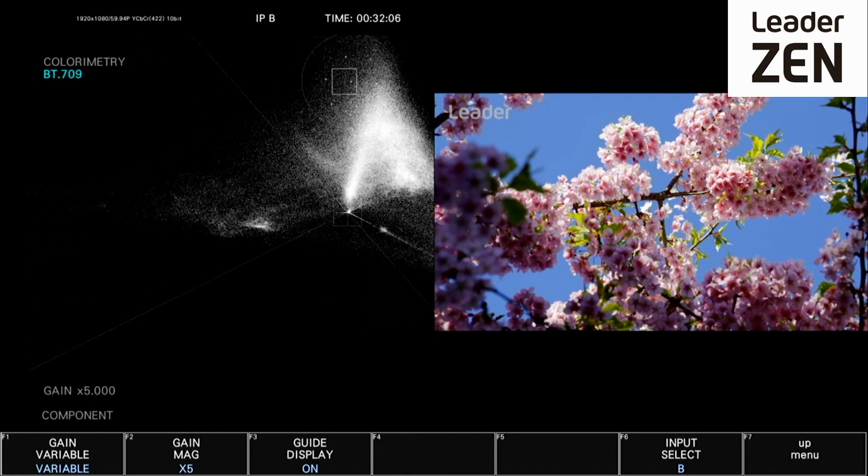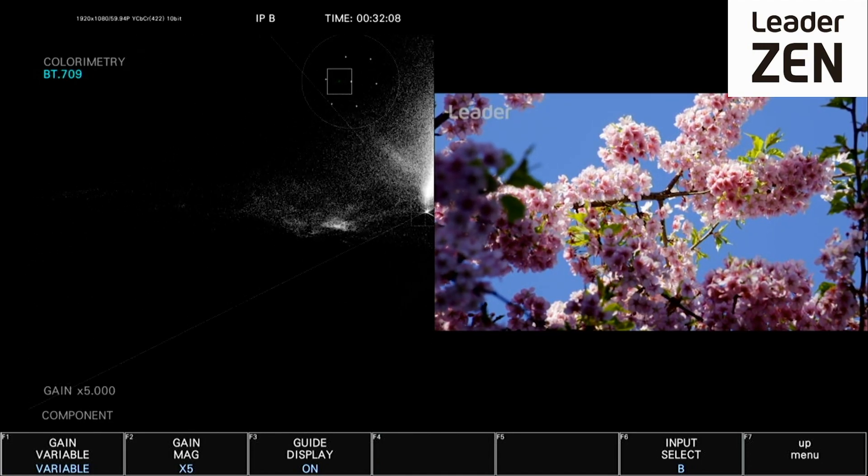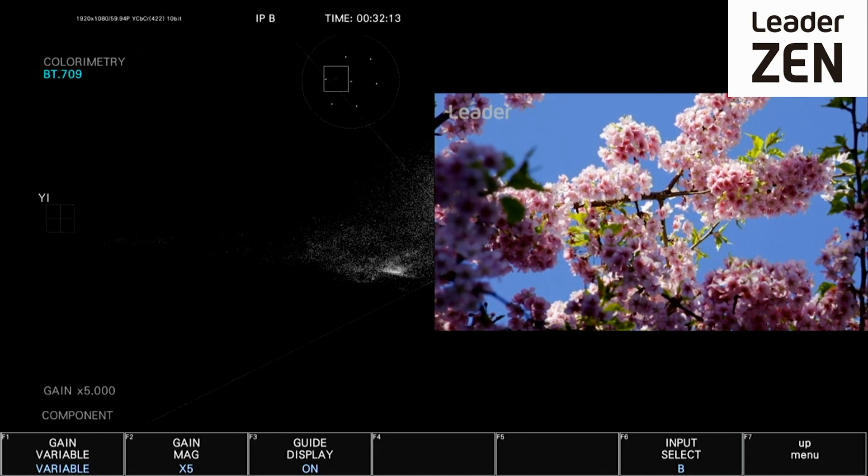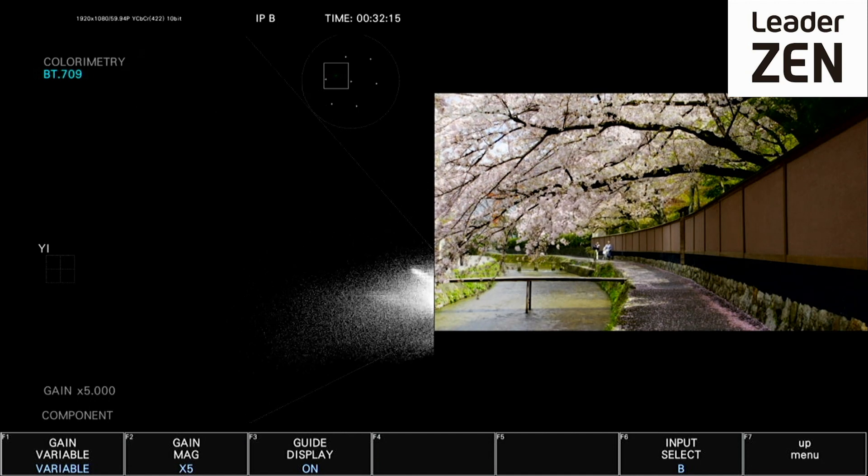A marker display window can also be enabled to allow the operator to locate exactly where on the vectorscope graticule the trace being displayed is located.